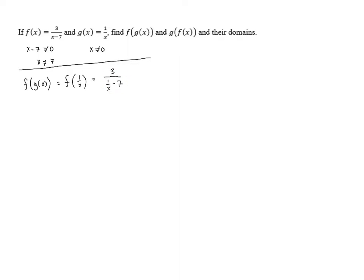We have a fraction inside of a larger fraction — this is a complex fraction, and the way to simplify it is to multiply the top and bottom of the main fraction by the LCD. In this case, the only smaller fraction is 1 over x, and its denominator is x, so the LCD is x. Multiplying: 3 times x gives us 3x in the top. In the bottom, we distribute x to both terms: 1 over x times x is just 1, and minus 7 times x gives us 7x. So our composition of functions is 3x over 1 minus 7x.